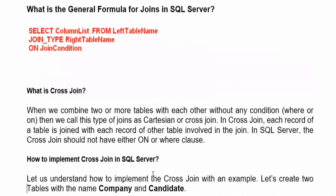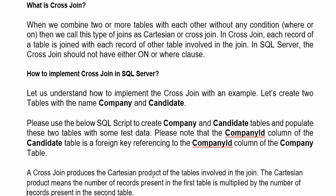We are discussing joins, starting with the cross join. When we combine two or more tables with each other without any condition — no WHERE or ON — we call this type of join a Cartesian or cross join. In a cross join, each record of a table is joined with each record of the other table. SQL Server cross join should not have either ON or WHERE.